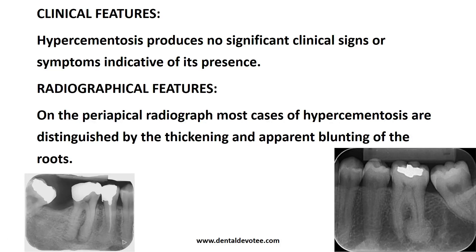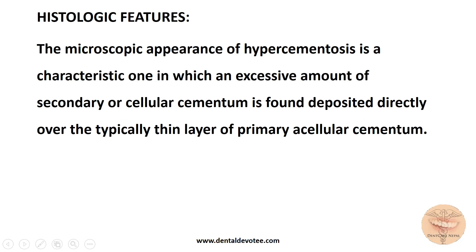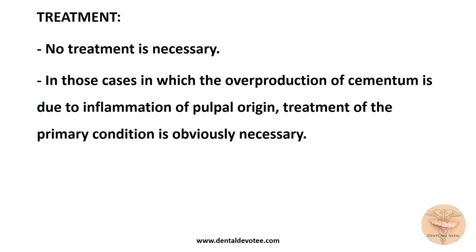In extreme cases we can see a bulbous root. On the periapical radiograph, most cases are distinguished by thickening and apparent blunting. Here the dentine and cementum cannot be differentiated — it is impossible to determine where the dentine ends and the cementum begins, but because of the shape we can identify this as hypercementosis. Histologically, the microscopic appearance is characteristic: an excessive amount of secondary or cellular cementum is found deposited directly over the typically thin layer of primary acellular cementum. The secondary cementum has been termed osteo-cementum because it is cellular in nature and resembles bone, and it is arranged in concentric layers around the root.